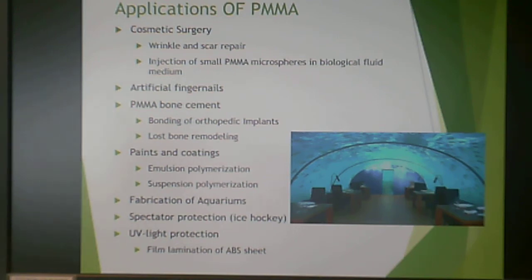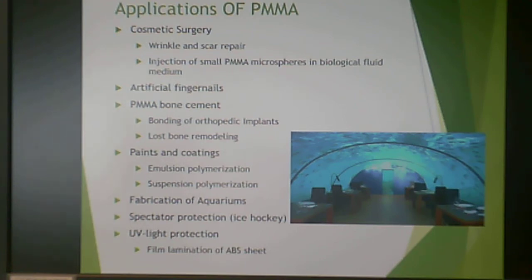Polymethylmethacrylate is also used in bone cement — it bonds orthopedic implants and can replace lost bone, helping it remodel. It's also used in dental bonding; it tastes terrible, but it is safe enough for those applications. It's used extensively in paints and coatings, especially for exterior applications, typically made by emulsion or suspension polymerization.